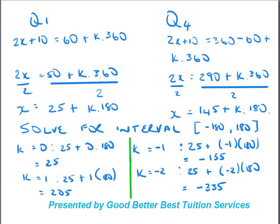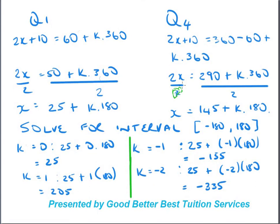Solving quadrant one: subtract 10 from both sides — 2x = 50° + k×360°, then divide by 2, giving x = 25° + k×180°. For quadrant four, we reference it as 360° minus the reference angle: 2x + 10° = 360° − 60° + k×360°. Subtract 10: 2x = 290° + k×360°. Divide by 2: x = 145° + k×180°. Remember the 360° must also be divided by 2.